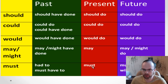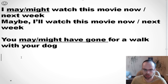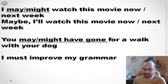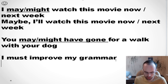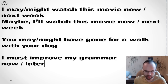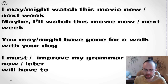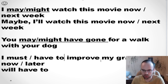Must. We use must for the present: 'I must improve my grammar.' Talking about the future, it's also possible to say 'I must improve my grammar later,' but we often use another structure for the future: will have to. Note the difference: 'I must' means it's my own decision, whereas 'I have to' means you need to do it because of external reasons.